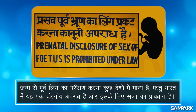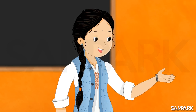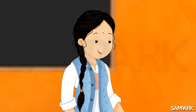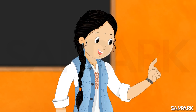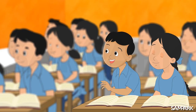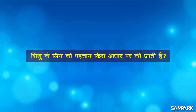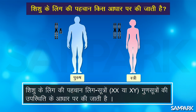समझ गया ना? जी, दीदी। चलो, जब लिंग निर्धारण के विषय में सारी जानकारी तुम सबको समझ में आ गई है, तो अब मैं तुम लोगों से कुछ प्रश्न पूछती हूँ। सोच समझ कर उनका उत्तर देना। पूछिए ना, दीदी। अच्छा, सबसे पहले ये बताओ कि शिशु के लिंग की पहचान किस आधार पर की जाती है? दीदी, शिशु के लिंग की पहचान लिंग सूत्रों, यानि X, X या X, Y गुण सूत्रों की उपस्थिति के आधार पर की जाती है।